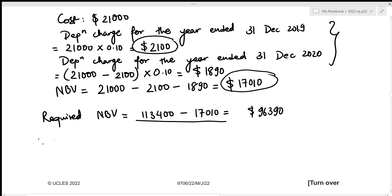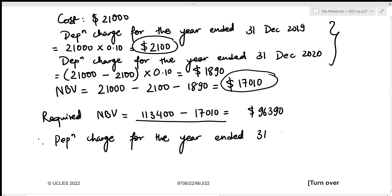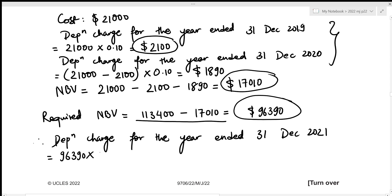Now we can calculate the final depreciation charge for the year ended 31st December 2021. Using the reducing balance method: 96,390 × 0.10 = $9,639. That is the required depreciation charge.